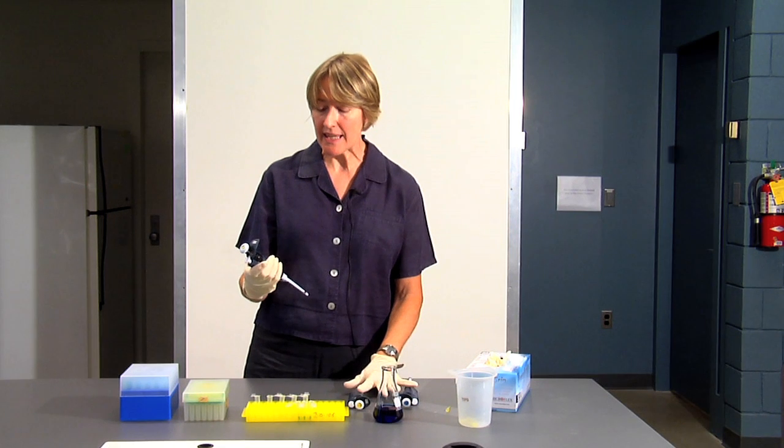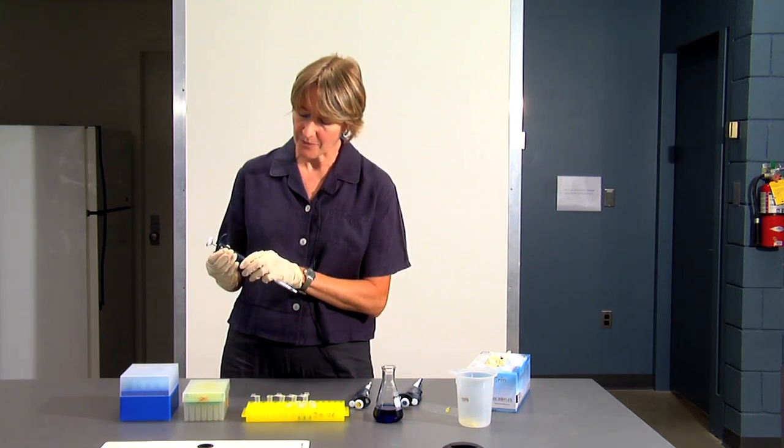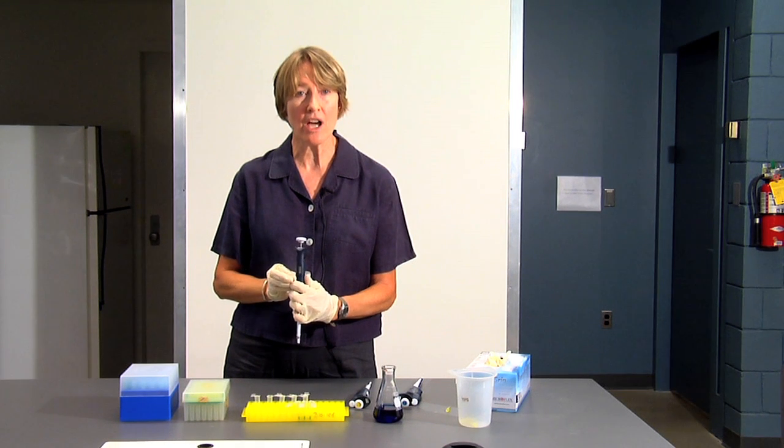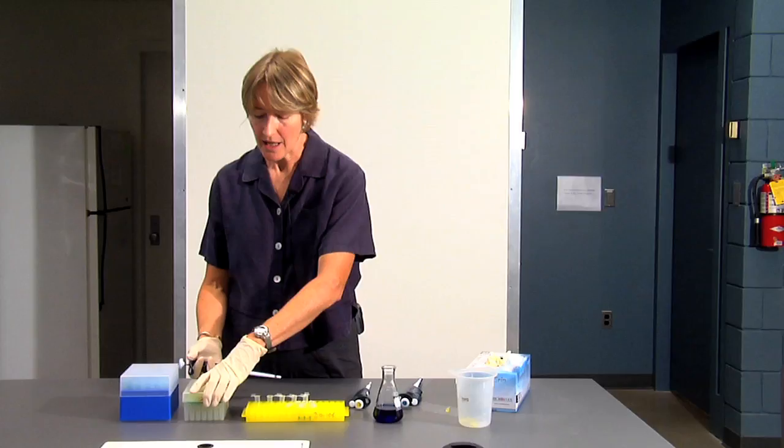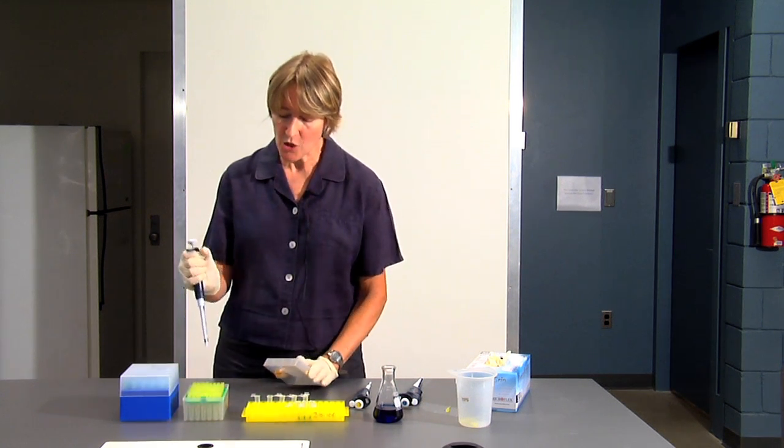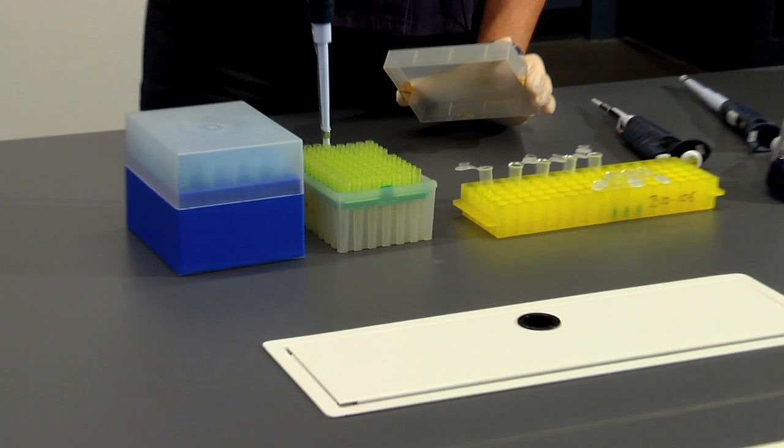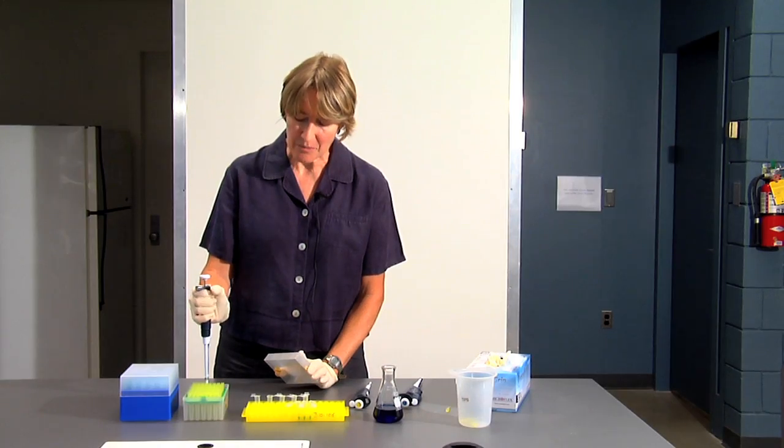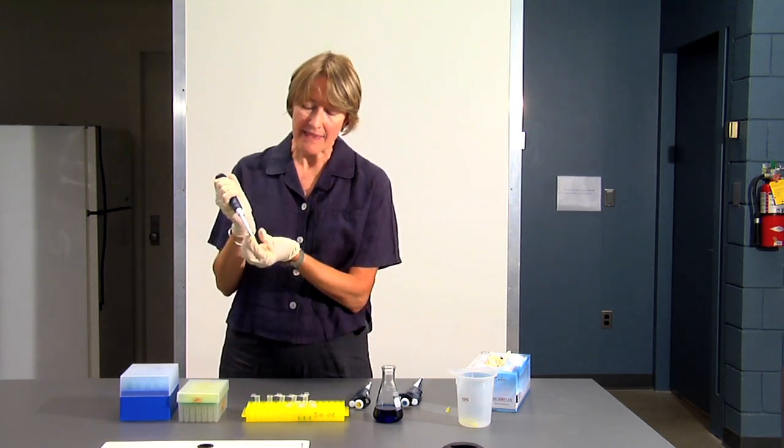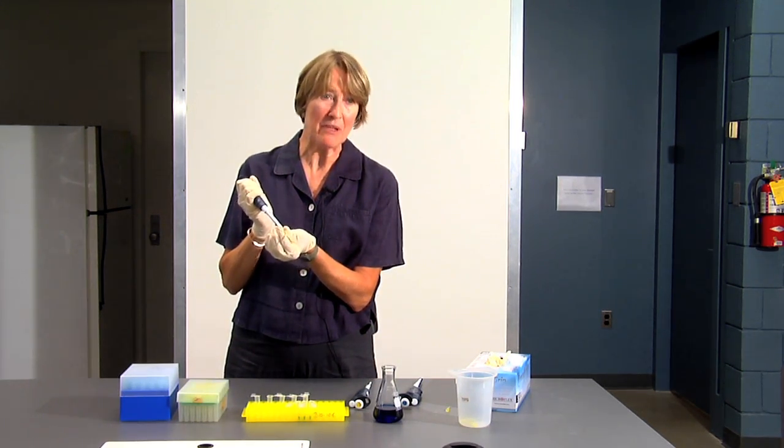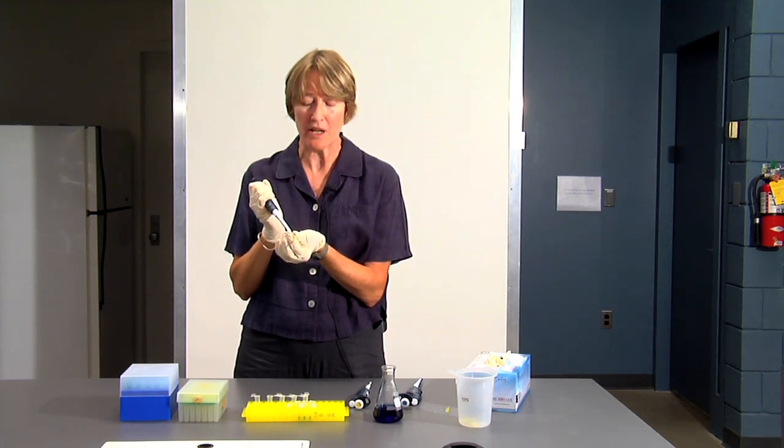I'm going to use the P200, and we're going to pipette 100 microliters. So I've set this to 100 microliters, 100, and I'm going to put a yellow tip on the micropipette. Press the micropipette down onto the tip. You don't even have to touch the tip. Lift it out of the box, and then you just might want to make sure that the tip is tight. You want it to be tight because if it's loose, you might pull up bubbles or the tip might fall off.